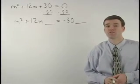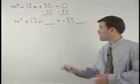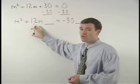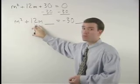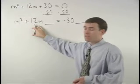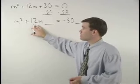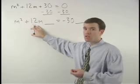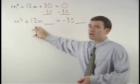Well, it comes from a formula. The number that goes in these spaces always comes from half the coefficient of the middle term squared. In this case, that's half of positive 12, which is positive 6, squared, which is positive 36.